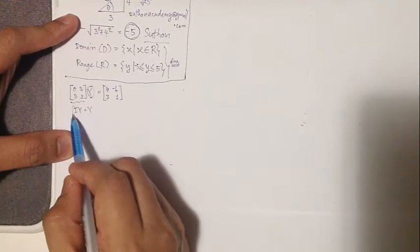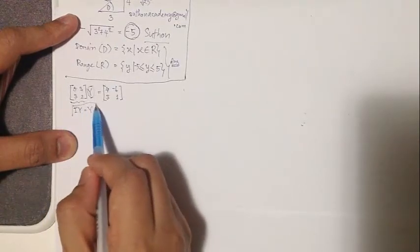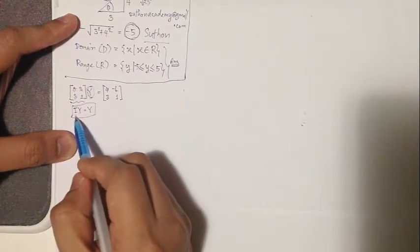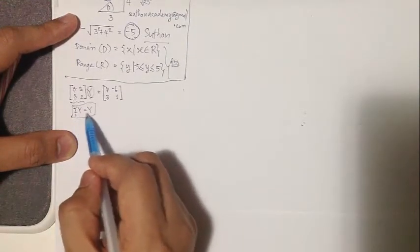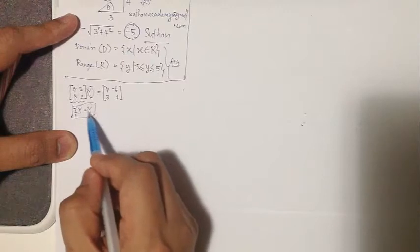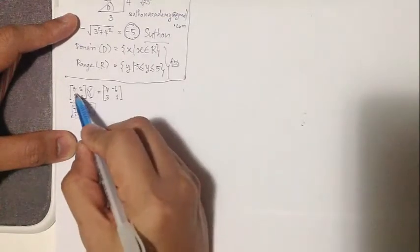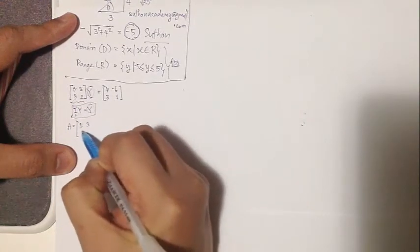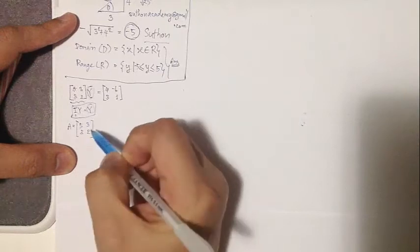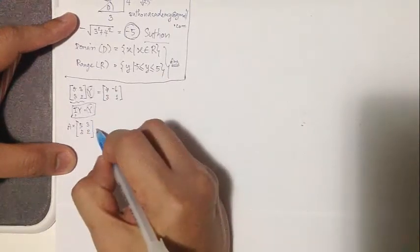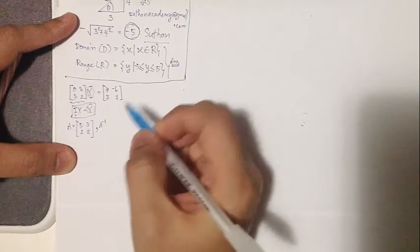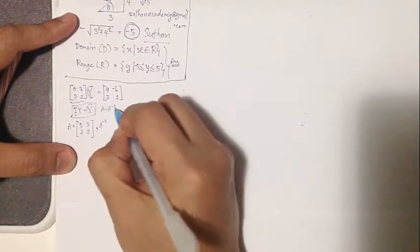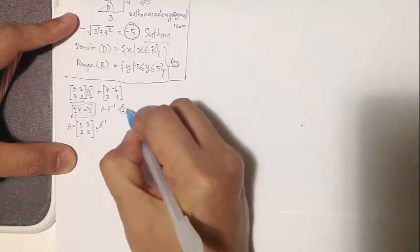So we know from the matrix that if the unit matrix times whatever matrix it will be equal to that matrix. First of all we assume that matrix A equals [5 3; 3 2], right? And we can find the A inverse matrix, because A times A inverse will be equal to the identity matrix.